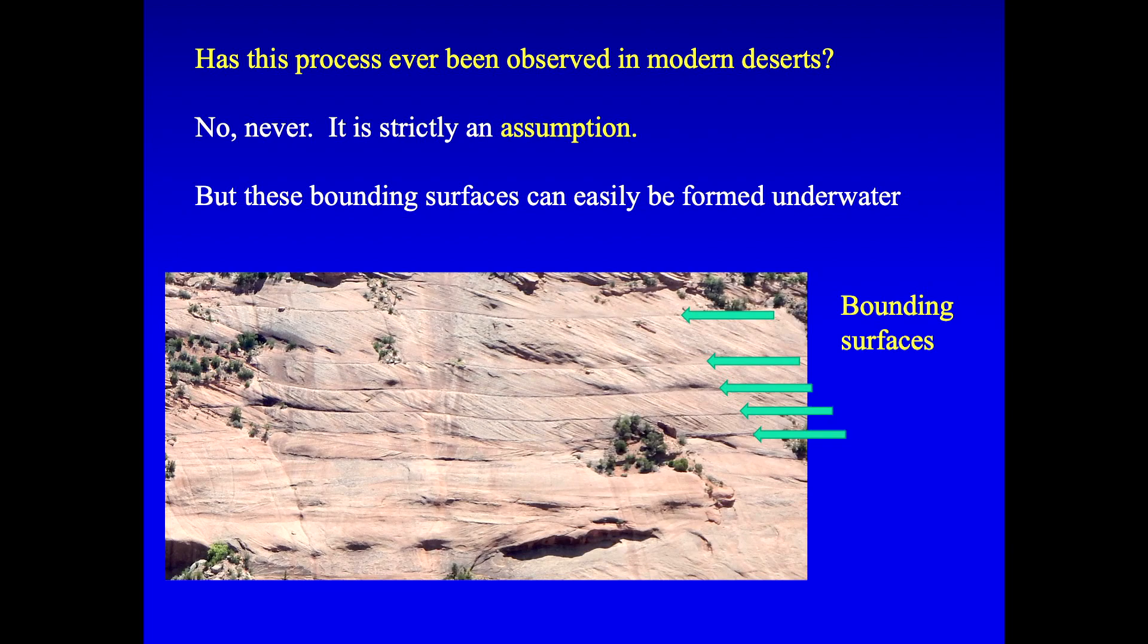But you might ask, well, how do I know? I've never seen all of them. That's true. But their theory desperately needs that process. And if they had ever observed even one of these bounding surfaces forming, I'm sure there'd be pictures and papers on it all over. Well, it's never been observed. So how does this happen? Well, it never has been seen. It's strictly an assumption that this can do this. Just an assumption with no evidence for it.